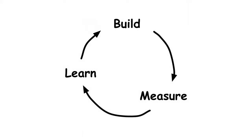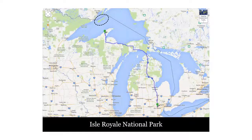One response to the resistance of software to change is to embrace agile and lean methods — minimal viable products, build-measure-learn, fail fast. There's a lot of value in those methods, but I worry the pendulum may swing too far at the expense of planning. Let me explain that with a story.